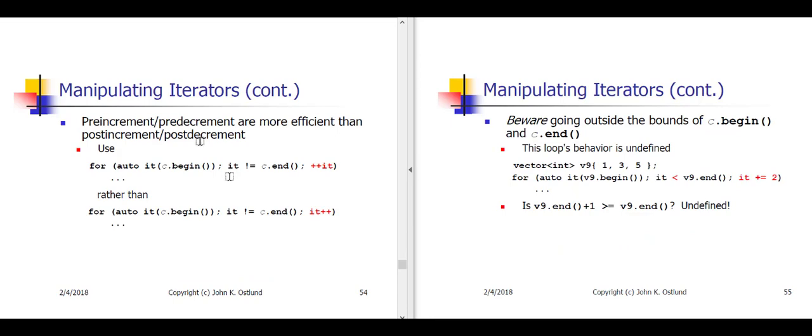Here on slide 54, we point out again something that I said before, which is that the pre-increment and pre-decrement operators on iterators are more efficient than the post-increment and post-decrement. So you should get in the habit of preferring pre-increment in things like for-loops rather than post-increment in the change expression.